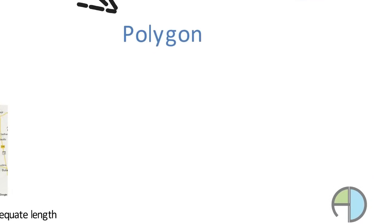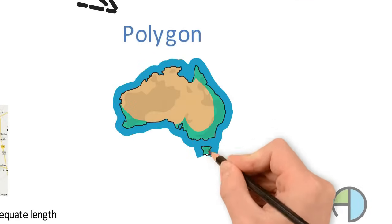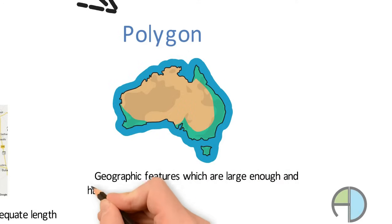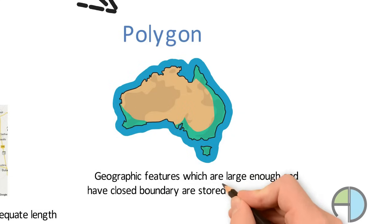An object which is large enough and covering an enclosed boundary is stored as a polygon. For example, a state boundary in a map.